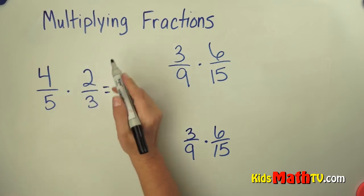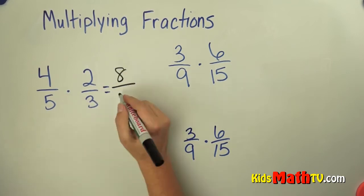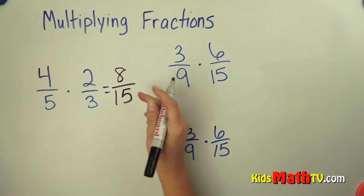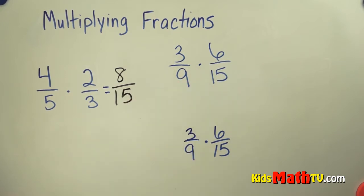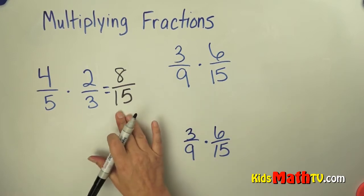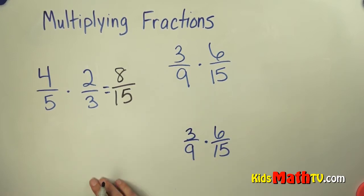So 4 times 2 is 8, 5 times 3 is 15. Then we check to see if we can simplify. Is there a number that will divide 8 and 15 evenly? There is not, so the answer is simply 8 fifteenths.